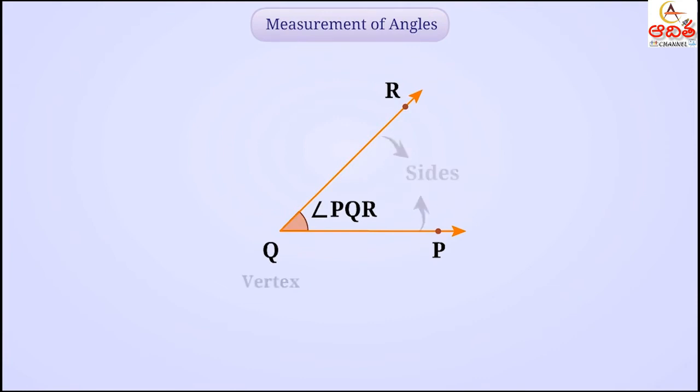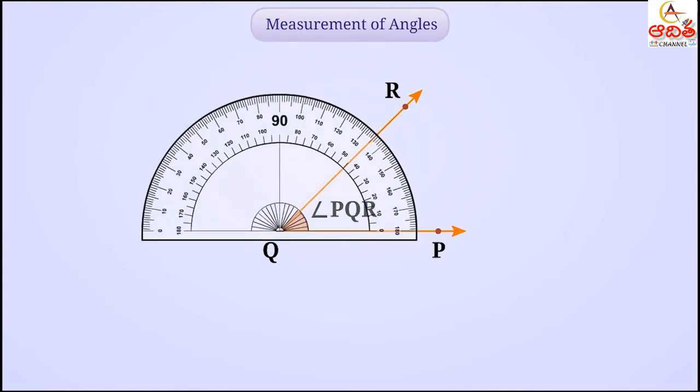Let us find the measurement of this angle. To start with, we place the protractor in such a way that the midpoint of its straight side comes on top of vertex Q. We will adjust the protractor in such a way that the line shown on the straight line completely covers any one side of the angle. Here, we place it on the side PQ.